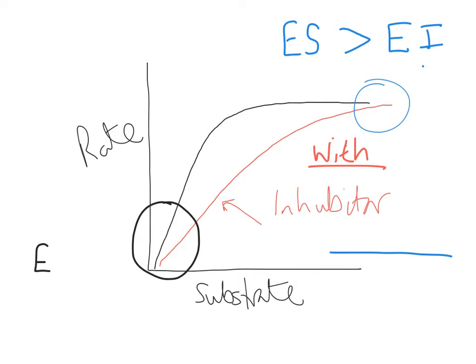At the lower end, of course, the opposite is true. At low substrate concentrations with a set amount of inhibitor, you can have more enzyme-inhibitor complexes than enzyme-substrate complexes, and therefore you're going to have a lower rate. But as you can clearly see from the graph, as you increase that substrate concentration, you eventually will reach the maximum possible rate of reaction for that concentration of enzyme.